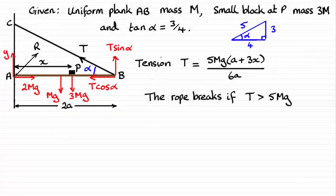Now, for this last part of the question, we're told that the rope will break if the tension exceeds 5mg. And we've got to explain how this is going to restrict the possible positions of P. In other words, just find out what our range of values of x would have to be.